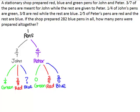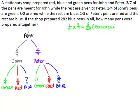To find the fraction of pens that are green pens for John, we will have to multiply along the branches. One-quarter of John's pens are green and three-sevenths of all the pens belong to John. So one-quarter multiplied by three-sevenths gives us three over twenty-eight. This means that three over twenty-eight of all the pens are green pens for John.